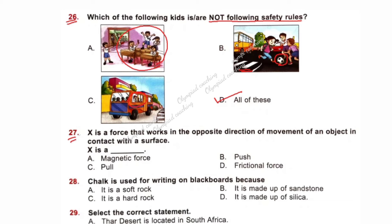Question number 27. X is a force that works in the opposite direction of movement of an object in contact with a surface. X is? Option D is correct: X is a frictional force. Frictional force opposes motion and works in the opposite direction of movement. Question number 28. Chalk is used for writing on blackboards because it is a soft rock.